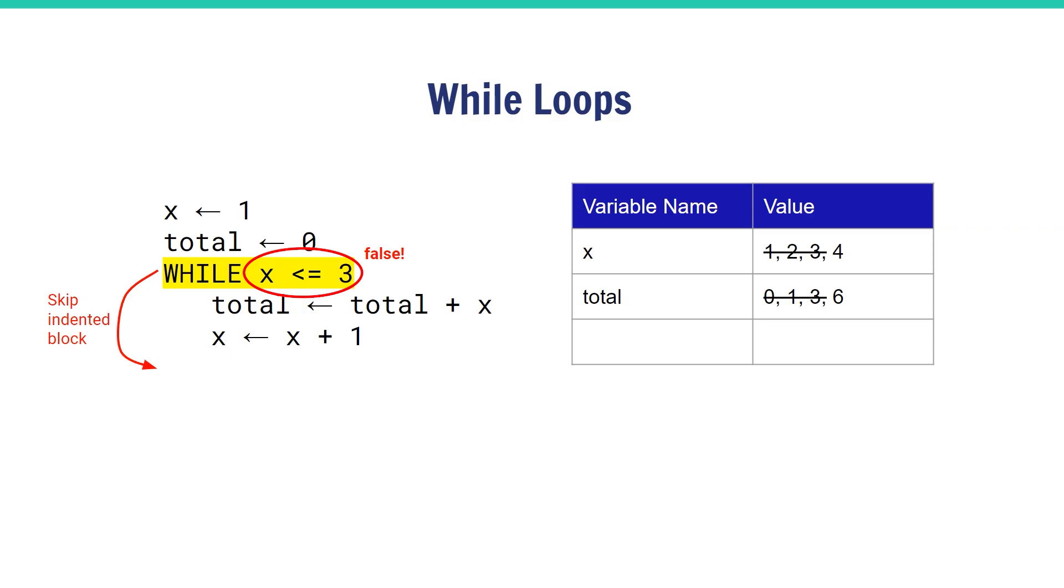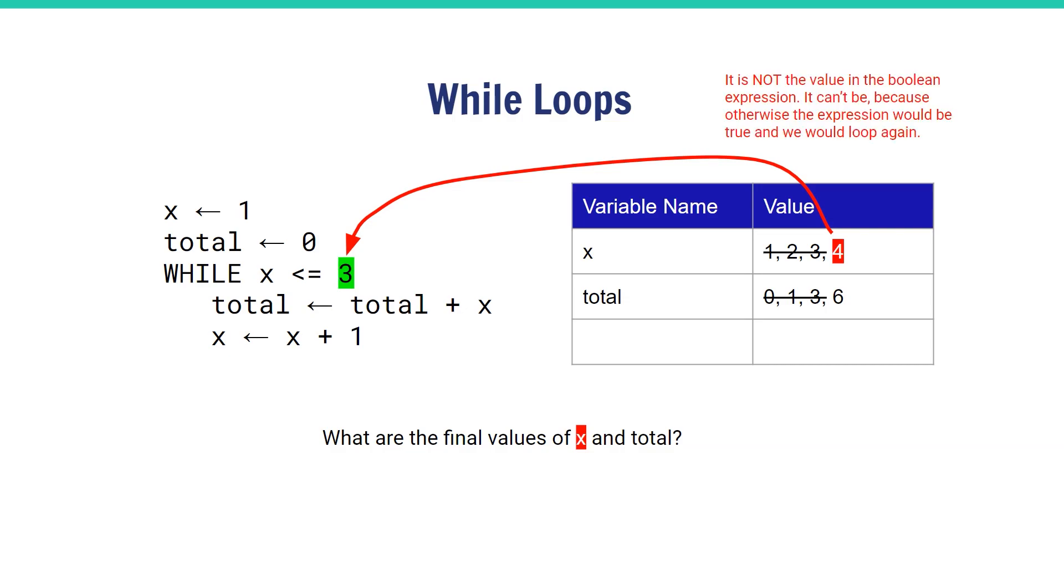Because there are no more unindented lines of code, the pseudocode is complete. Let's review the final values of x and total. The final value of x is four, which is different to the value in the boolean expression. It has to be greater than that value because that's what caused the boolean expression to be false.